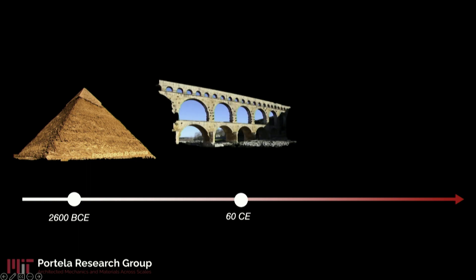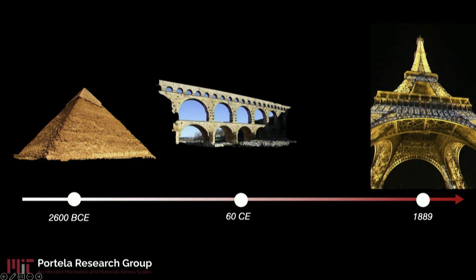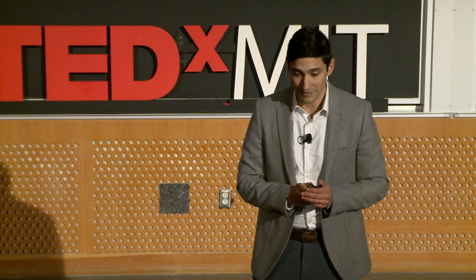Let's fast forward a couple of millennia and now we start seeing these Roman aqueducts that start using this concept of arches and now we can do way more with less material. And again let's fast forward a couple of millennia and this one of my favorite structures, the Eiffel Tower really epitomizes what we can do with materials nowadays. This is what we're trying to do but at the material length scale.